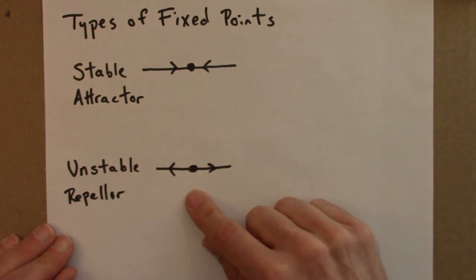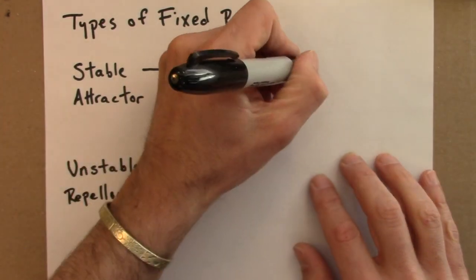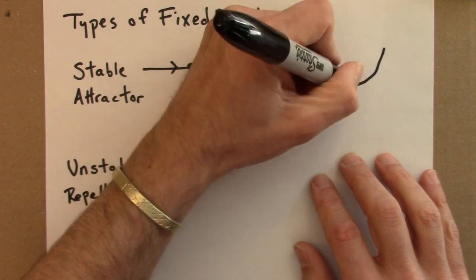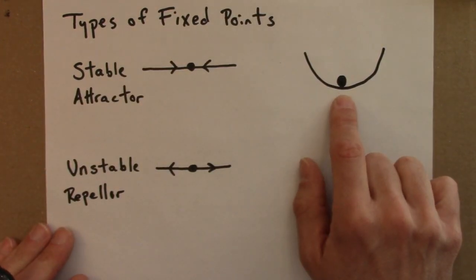There's another way, somewhat metaphorically, of illustrating these different types of fixed points. So a stable fixed point, you can think of it's sort of like having a marble or a ball resting in the bottom of a bowl.